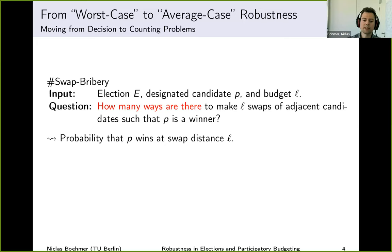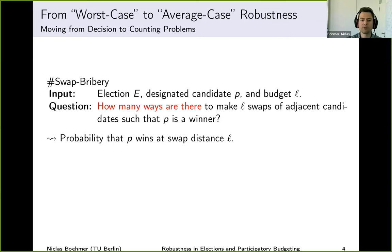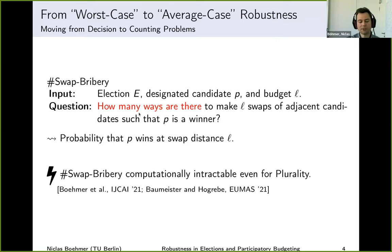If we could answer this, it gives us good intuition for robustness. For some noise level — some random number of swaps we want to perform — we take the count of sequences where p wins and divide by all possible sequences of length l. This immediately gives us the winning probability that p wins assuming we make l swaps. By increasing this swap distance and observing the winning probabilities, we get an intuition for the robustness of the election winner. Unfortunately, solving this exactly is computationally intractable even for plurality.